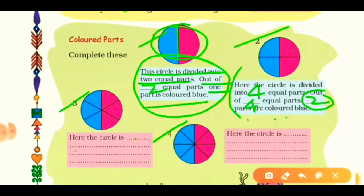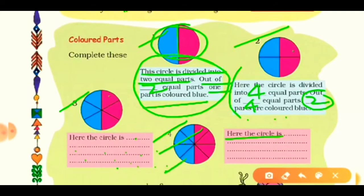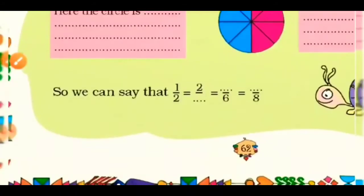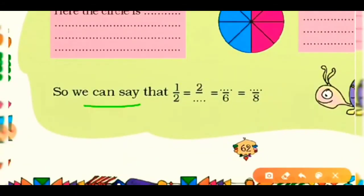For question three, the circle is divided into six equal parts and three parts are blue or pink. For question four, the circle is divided into eight equal parts and four parts are colored blue. Make sentences for each. Finally, we can say that 1/2 equals dash/4, equals dash/6, and equals dash/8.